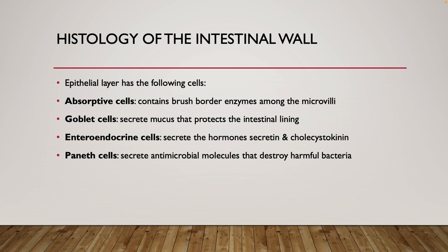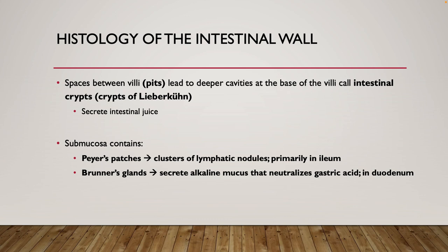We also have enteroendocrine cells, which secrete different hormones — including cholecystokinin, which we'll discuss. We have paneth cells, which relate to our immune system and help to destroy harmful bacteria. There is also normal bacteria in our gut — our normal flora — which is helpful and bacteria that we actually need. In our intestines, similar to the stomach, we have invaginations called intestinal crypts, which secrete intestinal juices and different substances from the intestine.